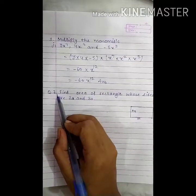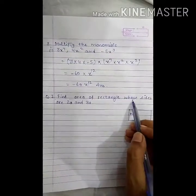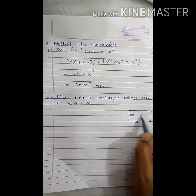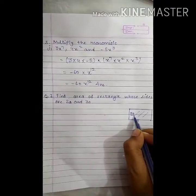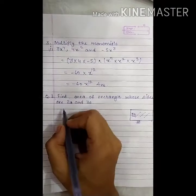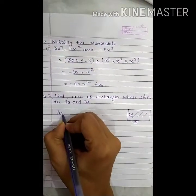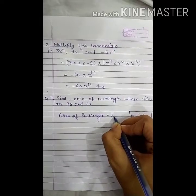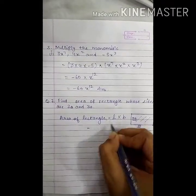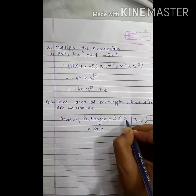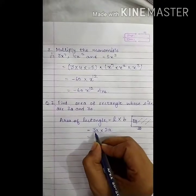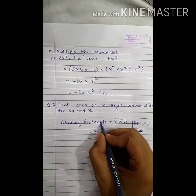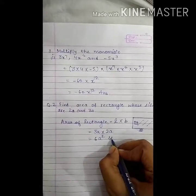Now, question number 7 is: Find area of rectangle whose sides are 2a and 3a. In this question, we have to find the area of rectangle whose sides are given as 2a and 3a. You know area of rectangle equals length multiplied by breadth. Here, length is 3a and breadth is 2a. It equals 3 times 2 is 6a multiplied by a is a². So, area of rectangle is 6a² square units.